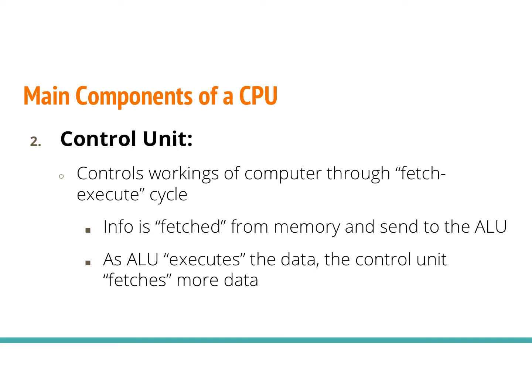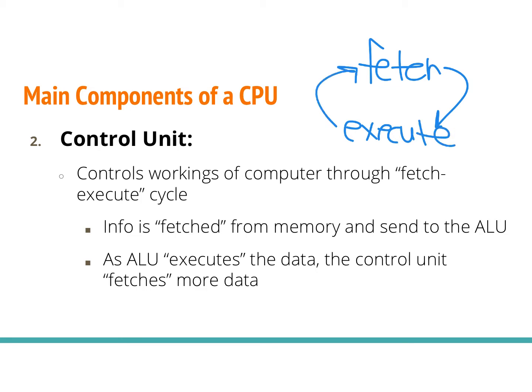The second piece of the CPU is called the control unit. What the control unit does is it fetches information and then executes an action — it's this cycle of fetch and then execute. As it's executing, it's going back to fetch more data, constantly fetching data and executing an action over and over again. It can use the ALU: it'll fetch information and the ALU will start executing the instruction, while the control unit goes back and fetches more information.